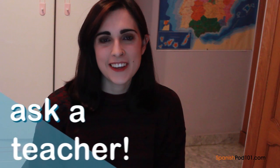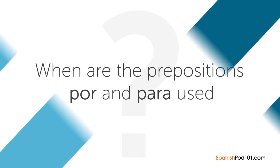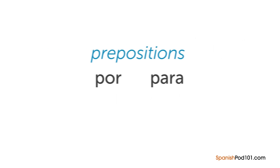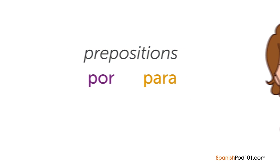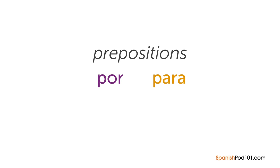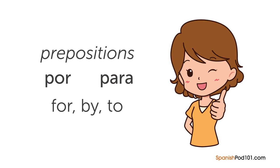Hi everybody, Rosa here. Welcome to Ask a Teacher, where I'll answer some of your most common Spanish questions. The question for this lesson is: when are the prepositions 'por' and 'para' used? Por and para are a little difficult for Spanish learners because both are used in similar contexts with similar meanings. In English, they are frequently translated as for, by, and to. Por comes from the Latin word 'pro' meaning for, while para is formed from the combination of the Latin prepositions 'pro' and 'ad' meaning for and to.